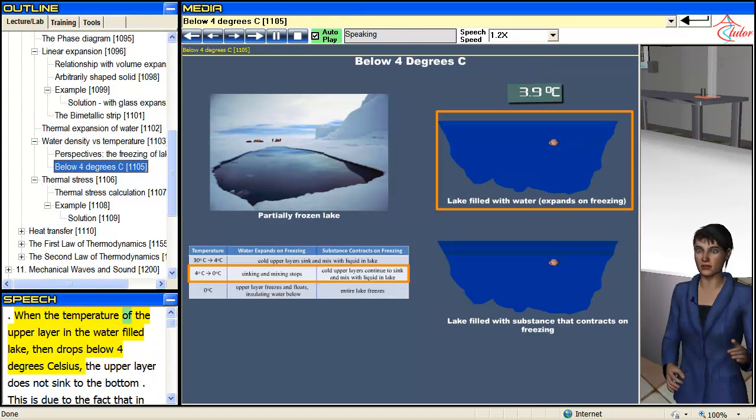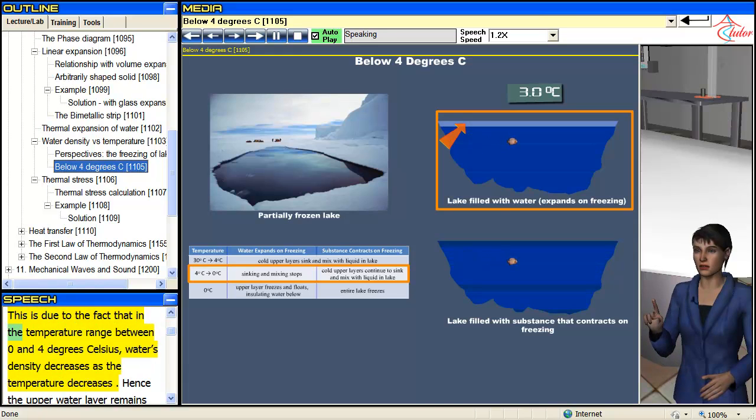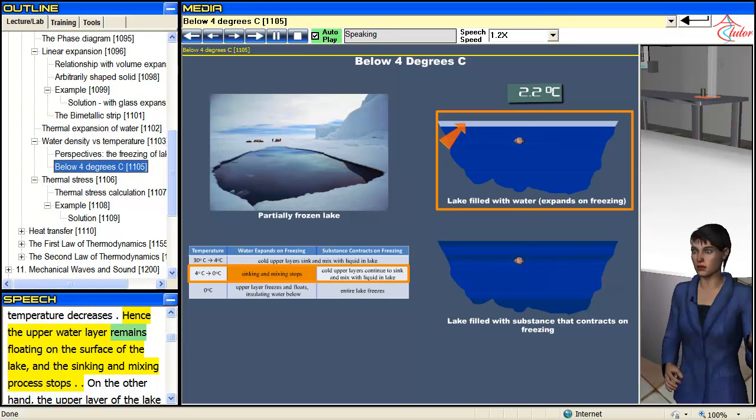When the temperature of the upper layer in the water filled lake then drops below 4 degrees Celsius, the upper layer does not sink to the bottom. This is due to the fact that in the temperature range between 0 and 4 degrees Celsius, water's density decreases as the temperature decreases. Hence the upper water layer remains floating on the surface of the lake, and the sinking and mixing process stops.